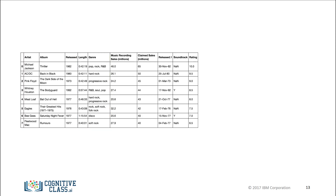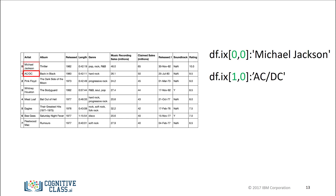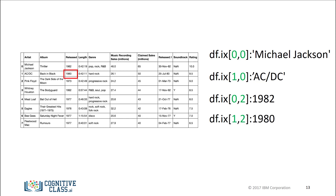One way to access unique elements is the IX method. You can access the first row and first column, the second row and first column, the first row and third column, or the second row and third column using this method.